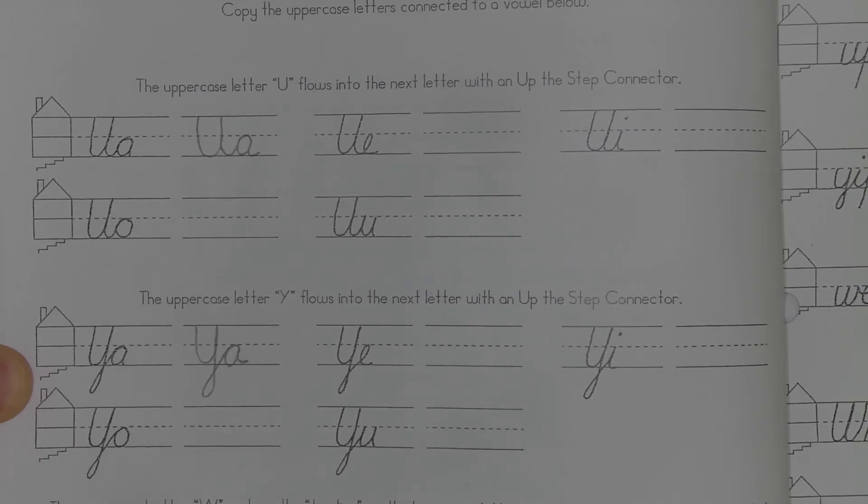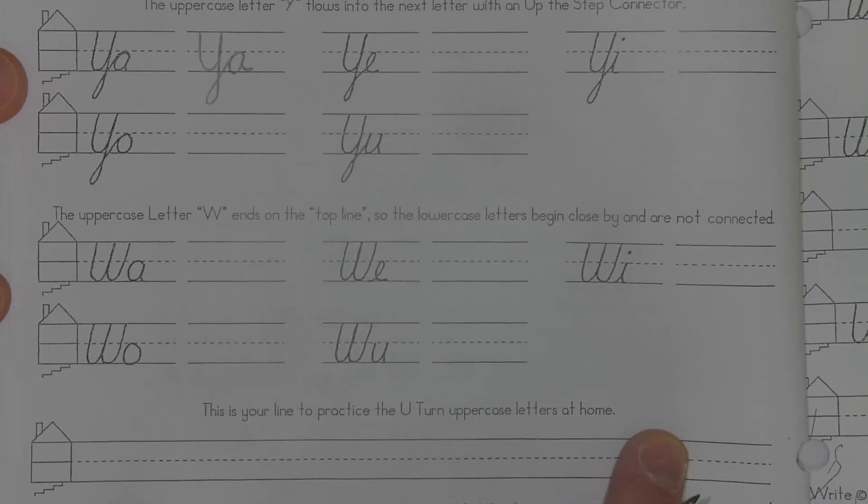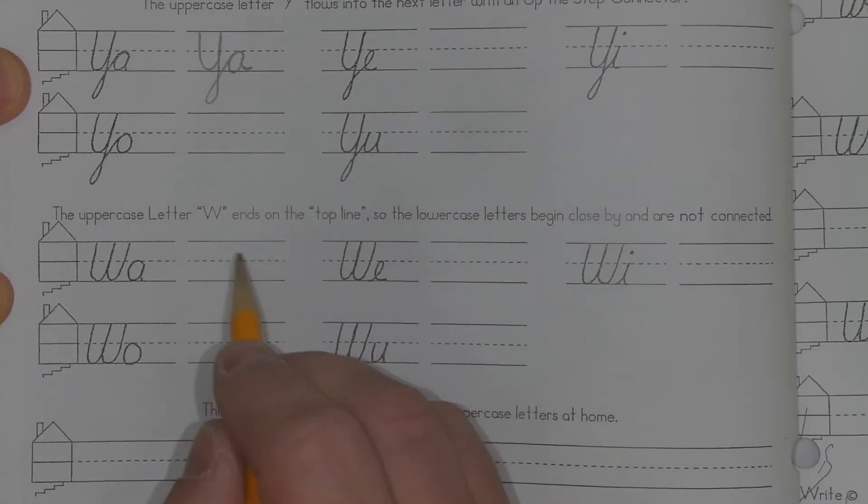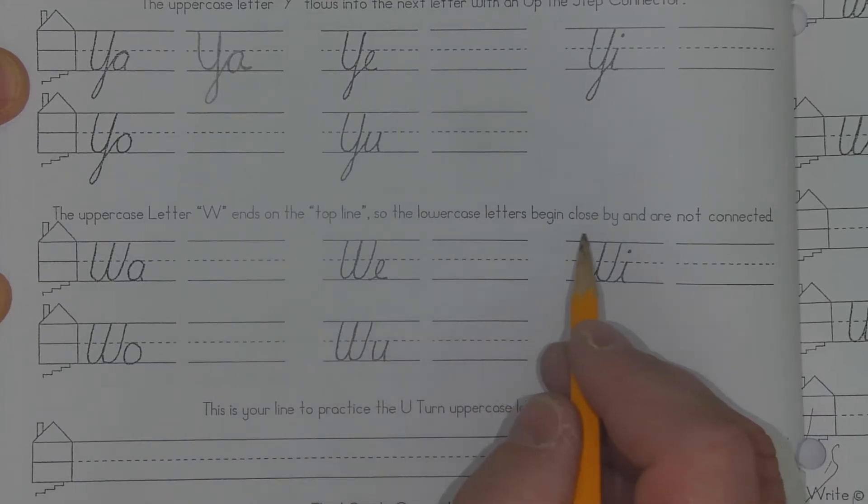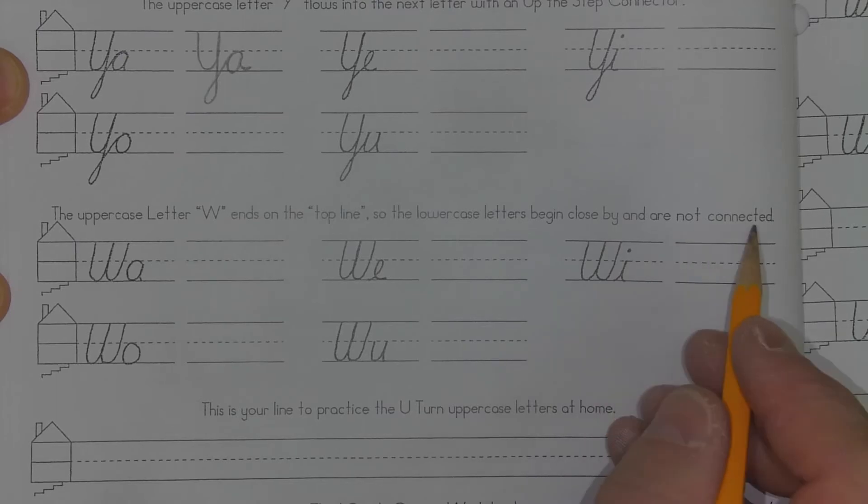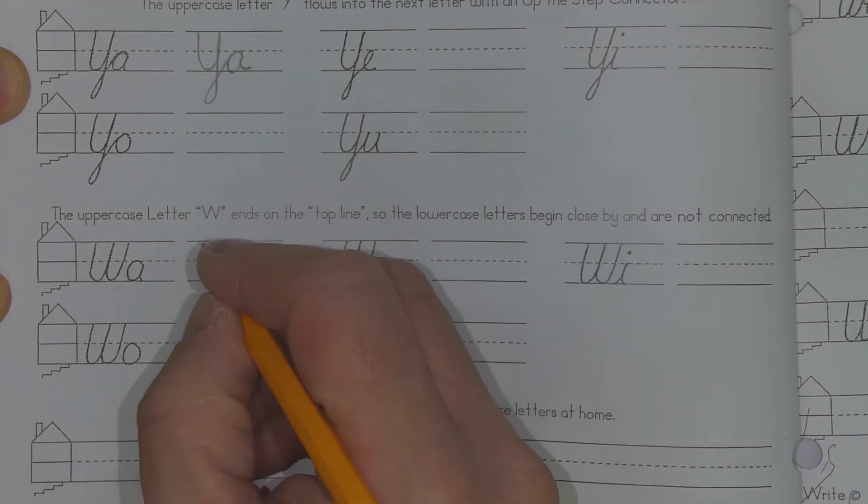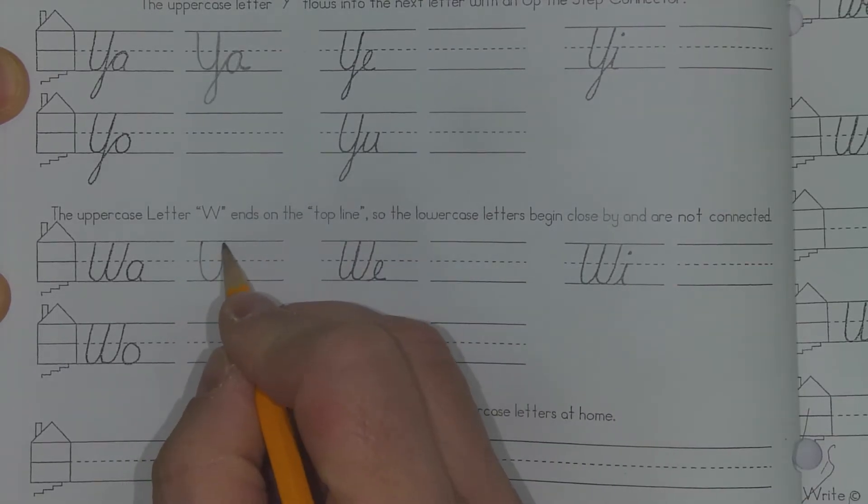So moving on down to the W. The letter W ends on the top line, so the lowercase letters begin close by and are not connected. So with W's, you don't connect. So I'll just make my U-turn. Make my U-turn again.